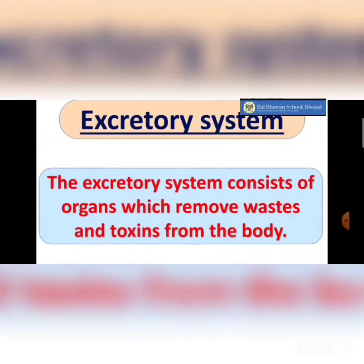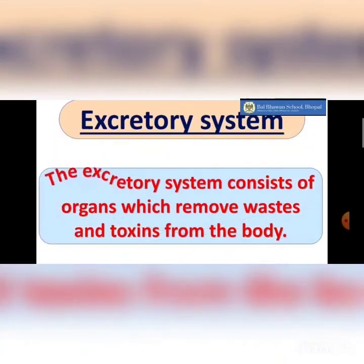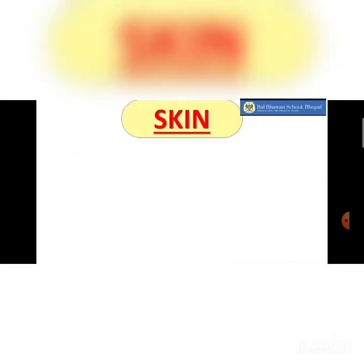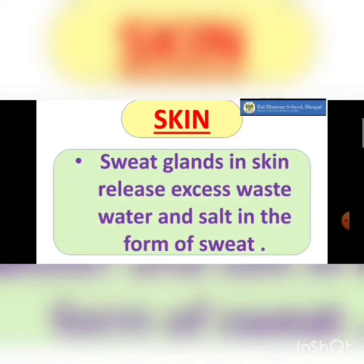The excretory system is an organ system that helps in getting rid of waste from inside our body. The first excretory organ is the skin. You will be surprised to know that the skin has sweat glands which release excess waste, water, and salt in the form of sweat.